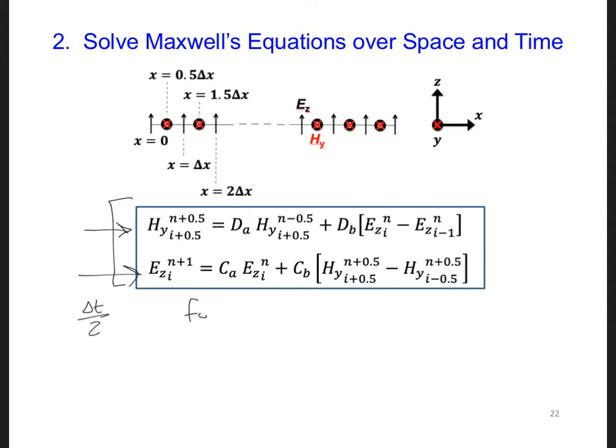So for example, we might write for i equal 1 to i max minus 1, since there's i max minus 1 number of Hys in the grid. And then here, I'll add a note about how now we're going to update all the Hys, and then we would close that loop.